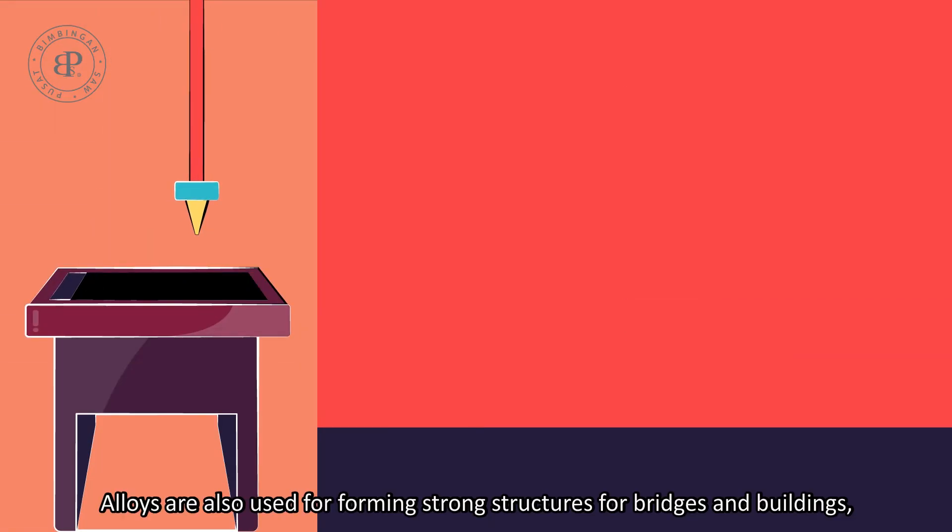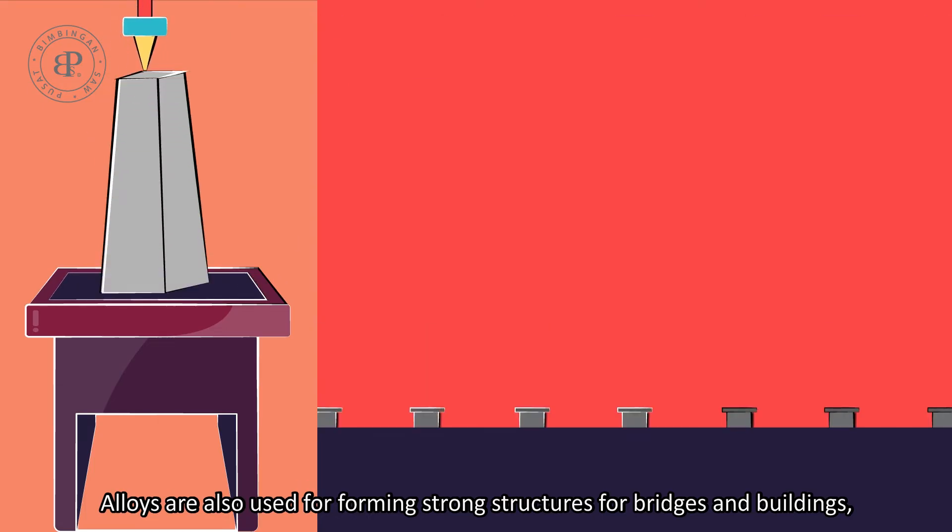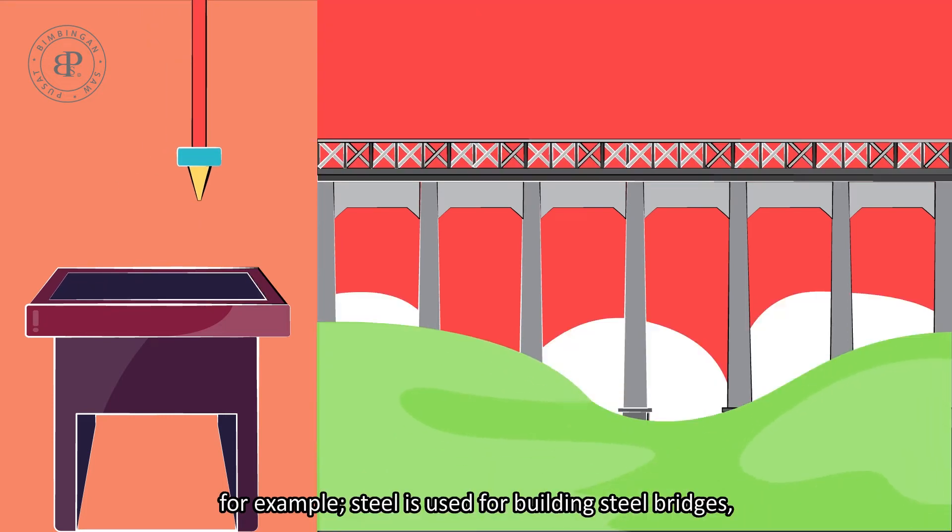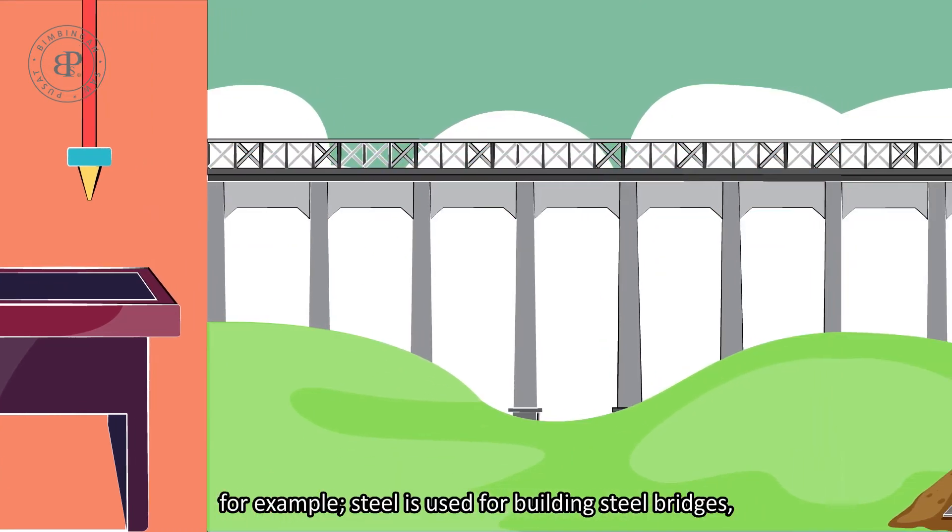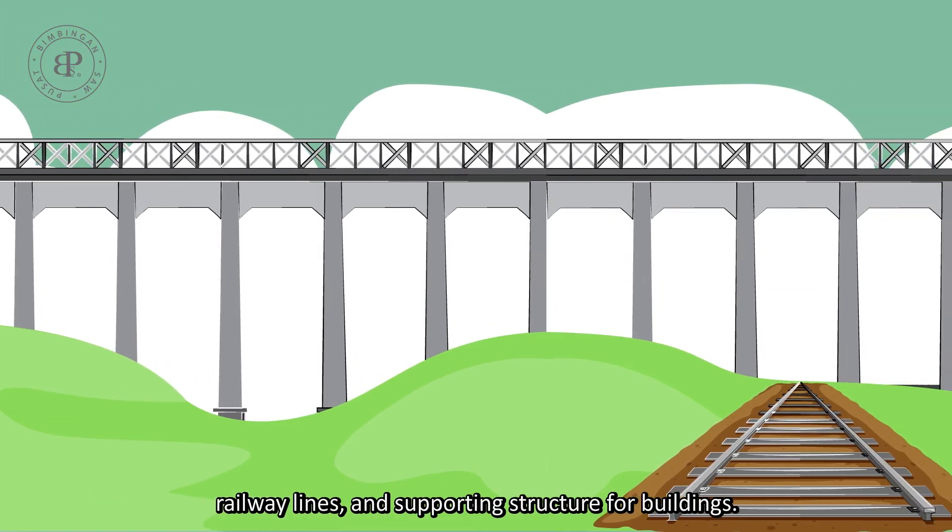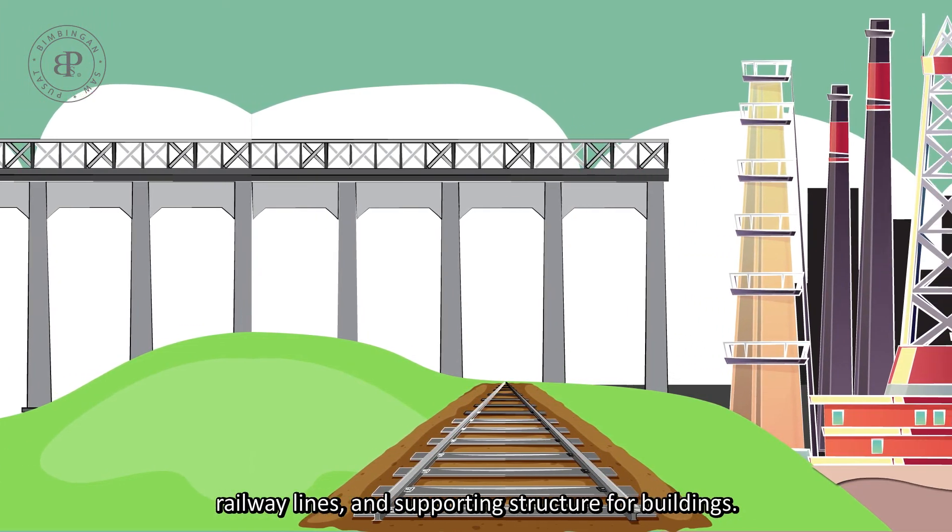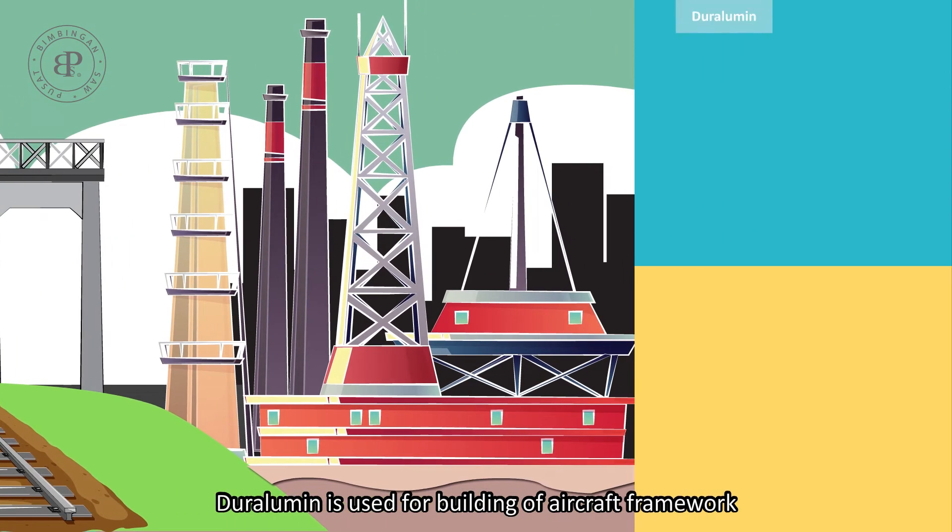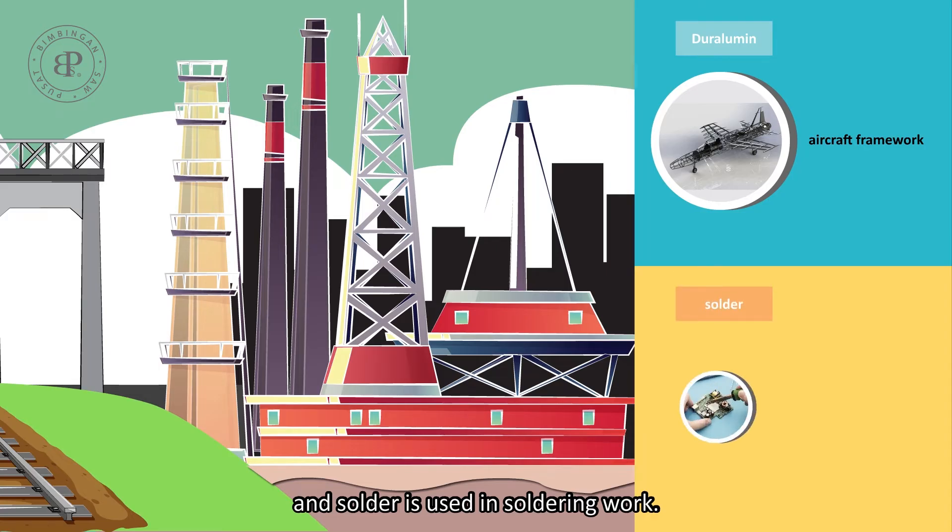Alloys are also used for forming strong structures for bridges and buildings. For example, steel is used for building steel bridges, railway lines and supporting structures for buildings. Duralumin is used for building aircraft frameworks and solder is used in soldering work.